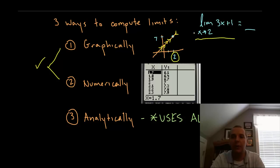Here's an example we'll look at for all three of these. The limit as x approaches 2 for the line 3x plus 1. Just looking at the graph, as the x's get closer to 2 it looks like these y values are getting closer to 7.